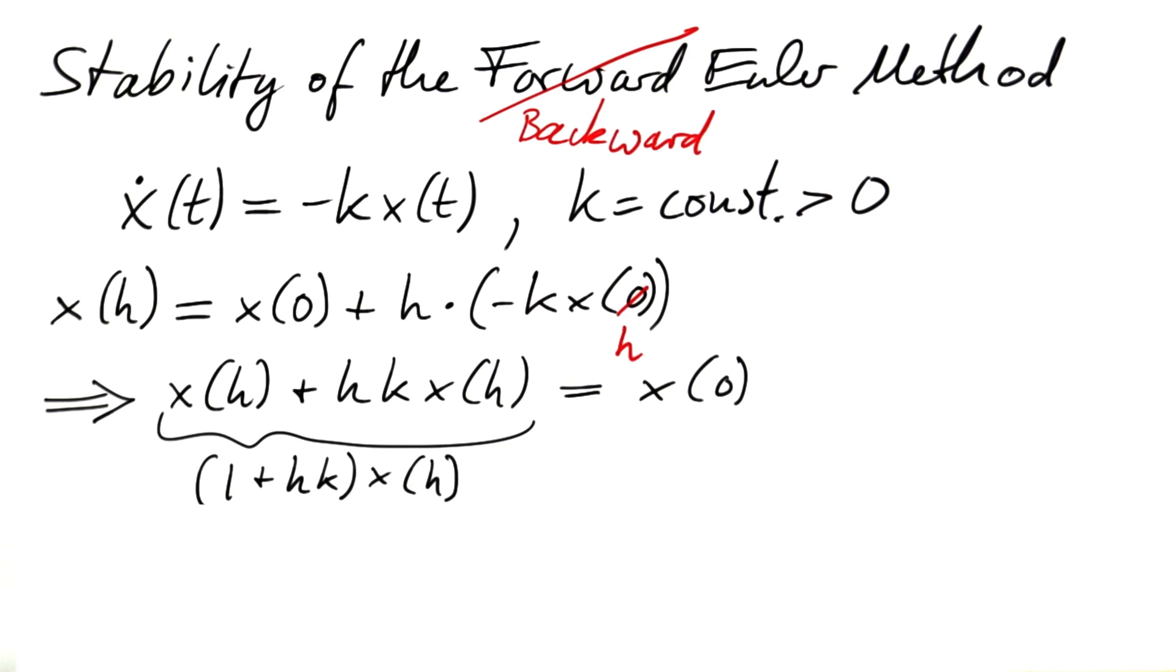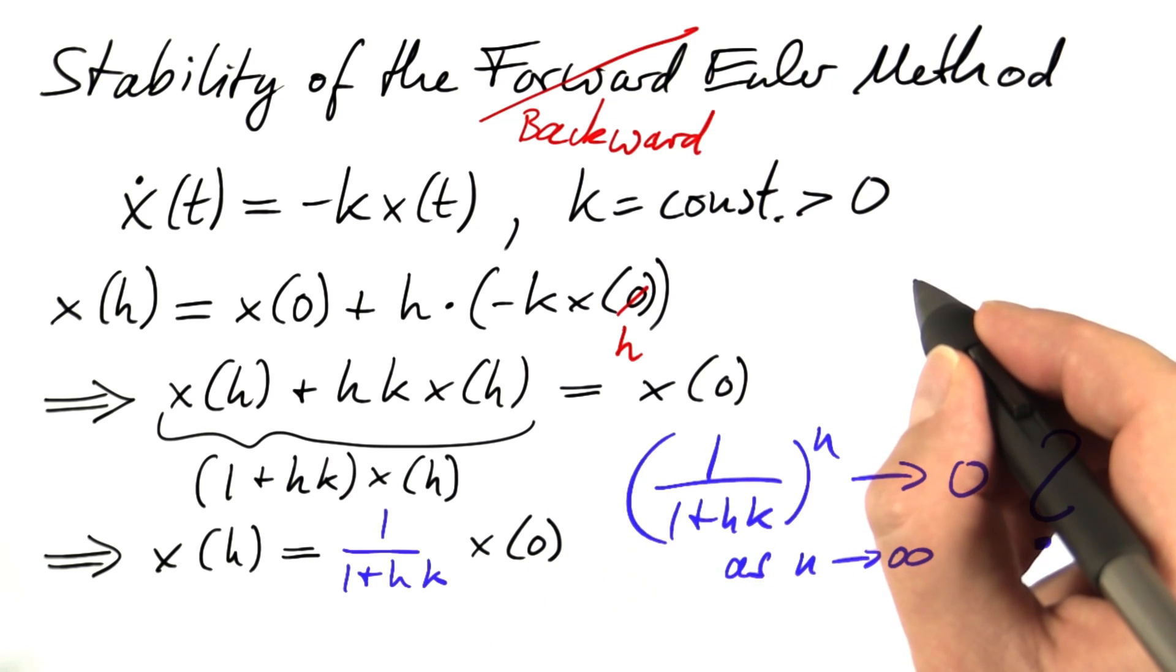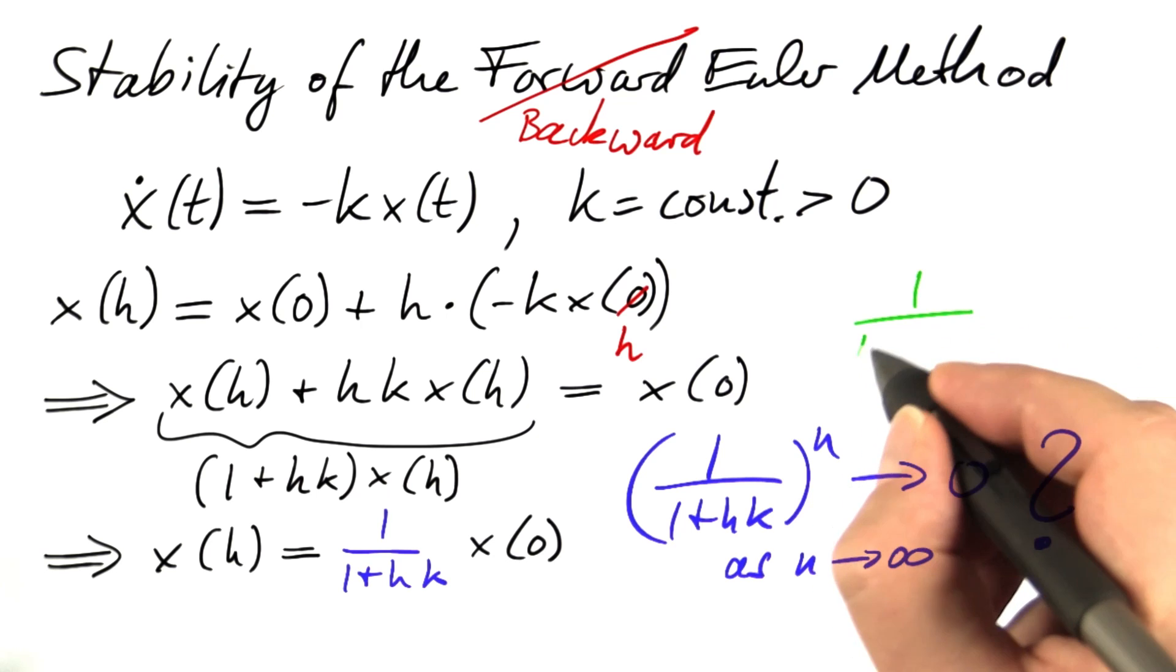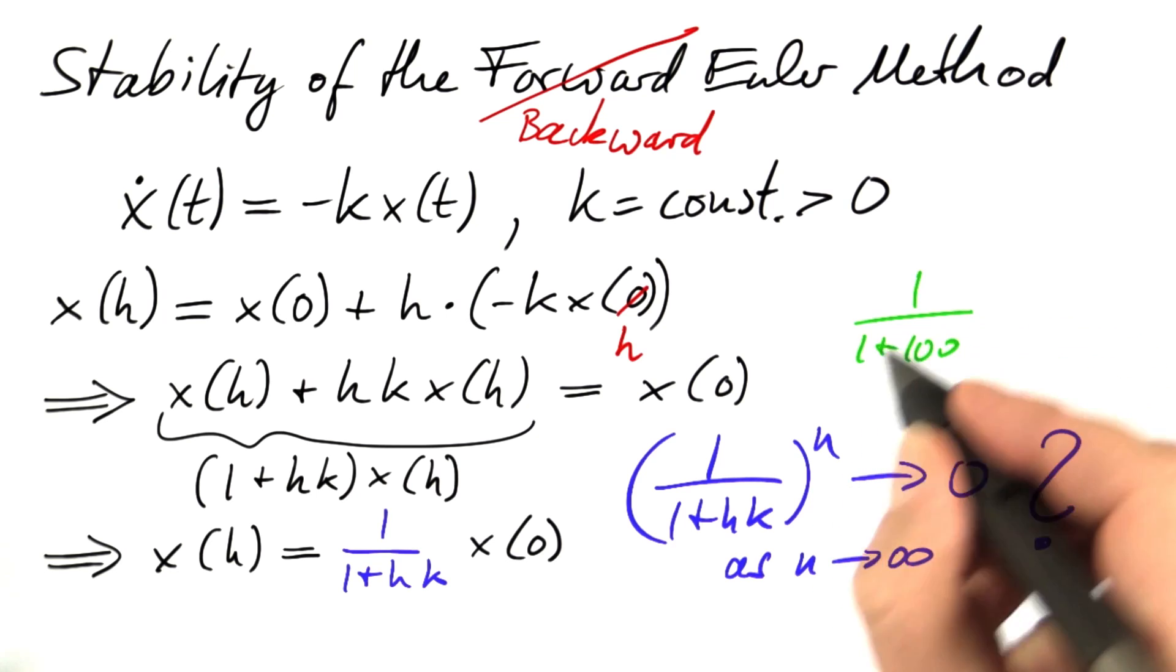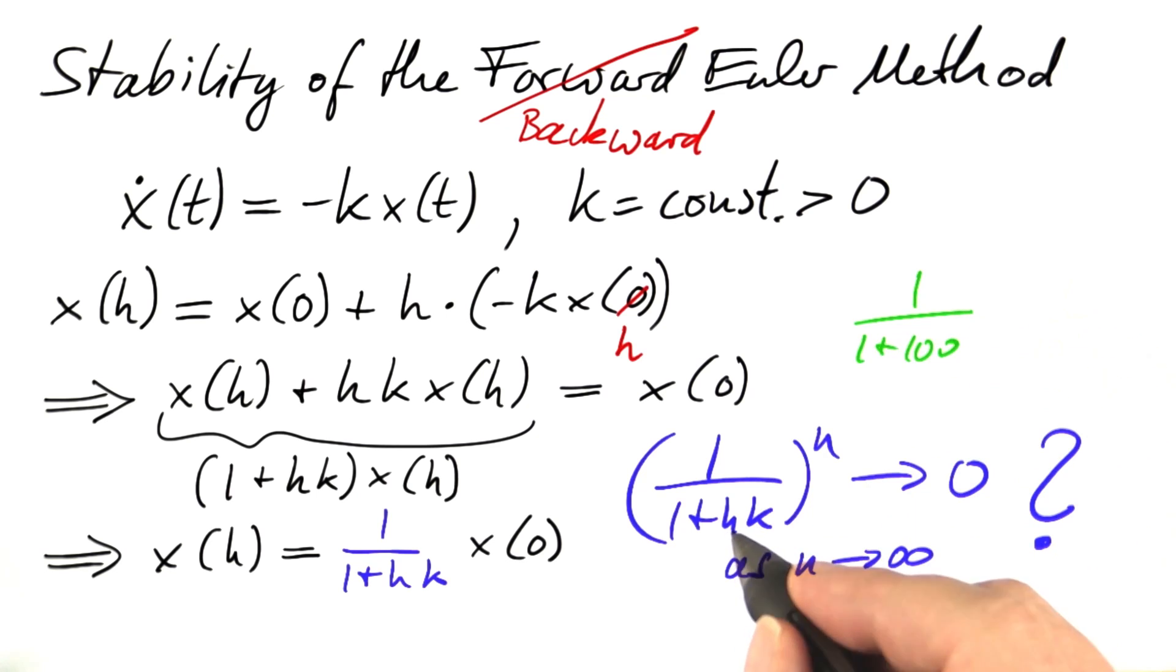We can factor out x of h and find that x of h equals the initial value divided by 1 plus hk. This is something like 1 over 1 plus 100 if we choose a really large h, which would be 1 over 101.